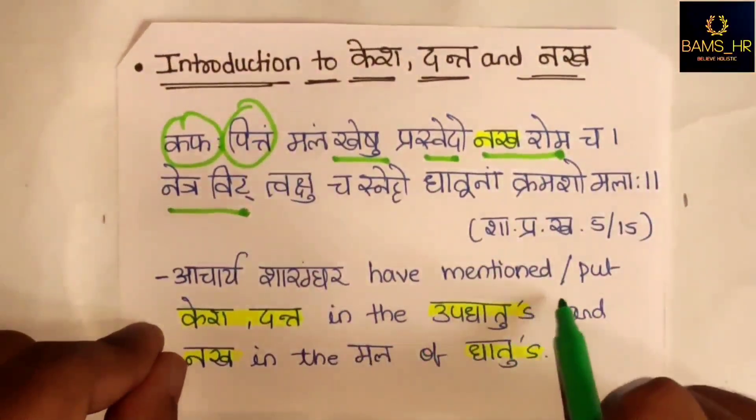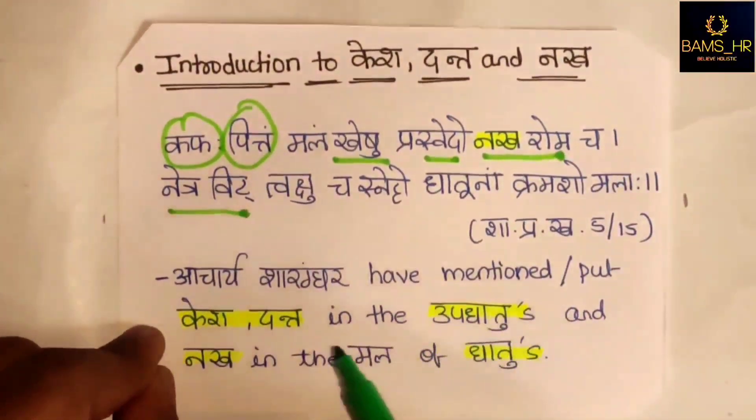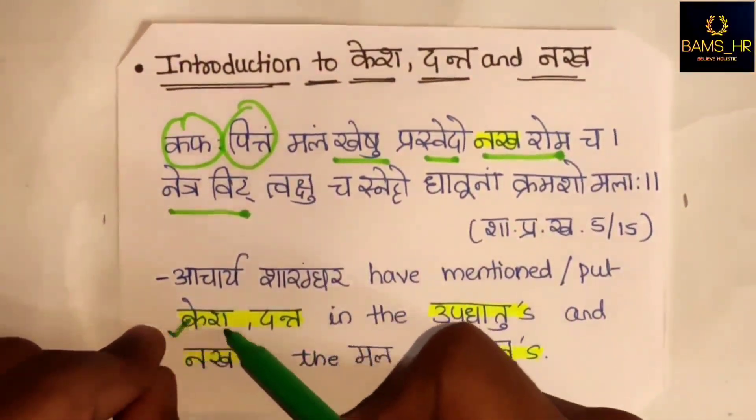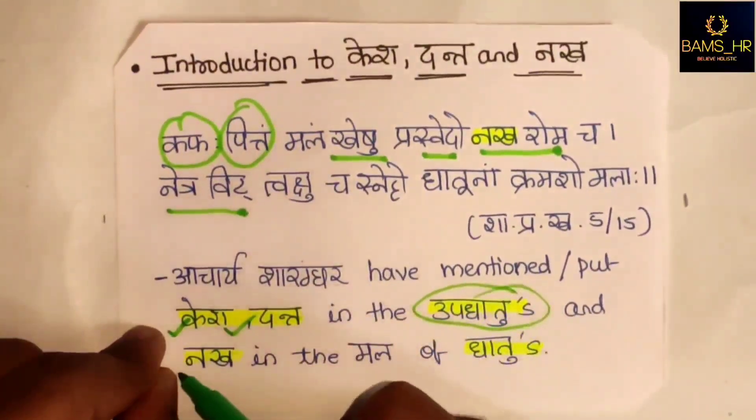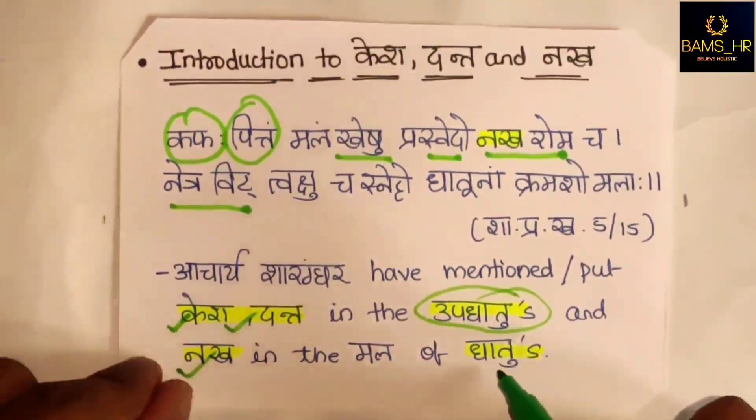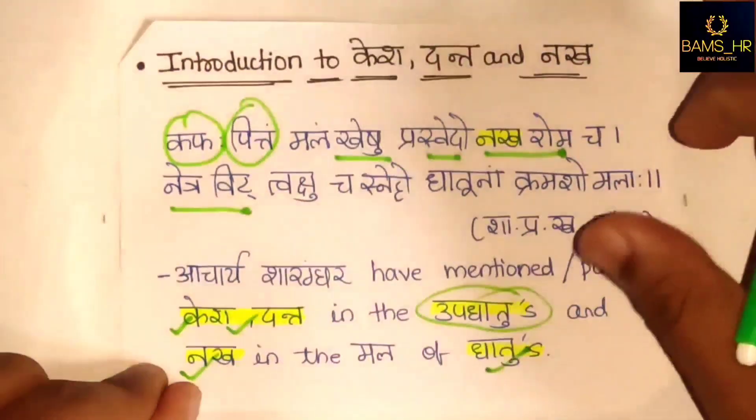Acharya Sharangadhara has mentioned Kesha and Dantha under Upadhatus and Nakha under the Dhatus.